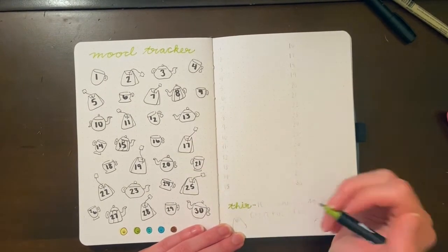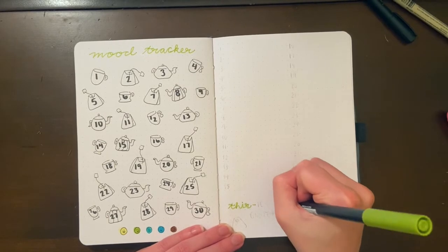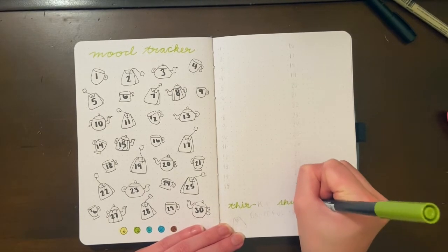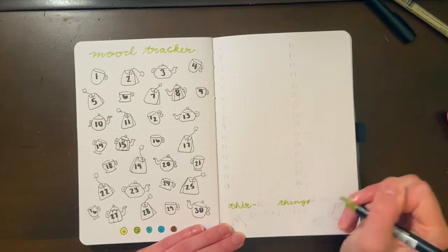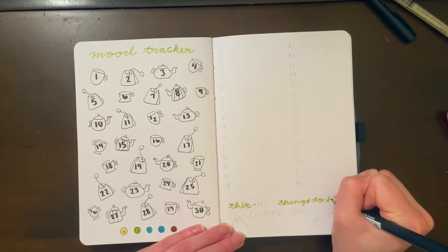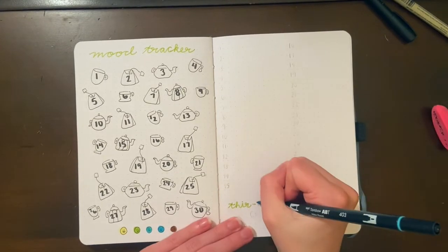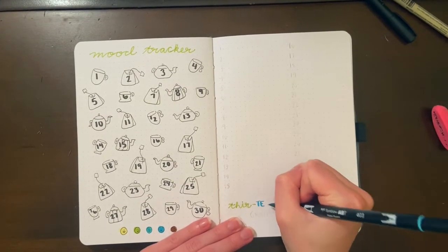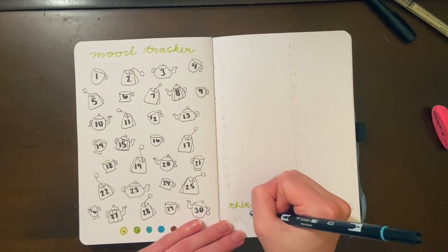I kept my gratitude spread pretty simple. I just left 30 different spots to write something, but I did put a little pun at the bottom writing '30 things to be grateful for' and added a little doodle with a kettle, mug, and tea bag.